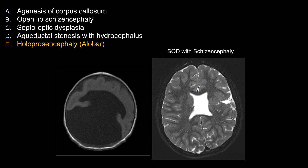In this case, this is an example of septal optic dysplasia with schizencephaly. You see absence of the septum pellucidum, and when I see that, I think about holoprosencephaly — and septal optic dysplasia on the board exam. Some people consider septal optic dysplasia as the mildest form of holoprosencephaly, but the division of the left and right side of the brain is complete, unlike holoprosencephaly.